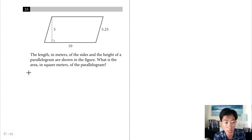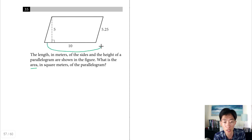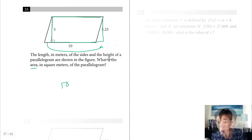Question 35: find the area of a parallelogram with base 10 meters and height 5 meters. Area of a parallelogram equals base times height, which is 10 times 5 equals 50 square meters.